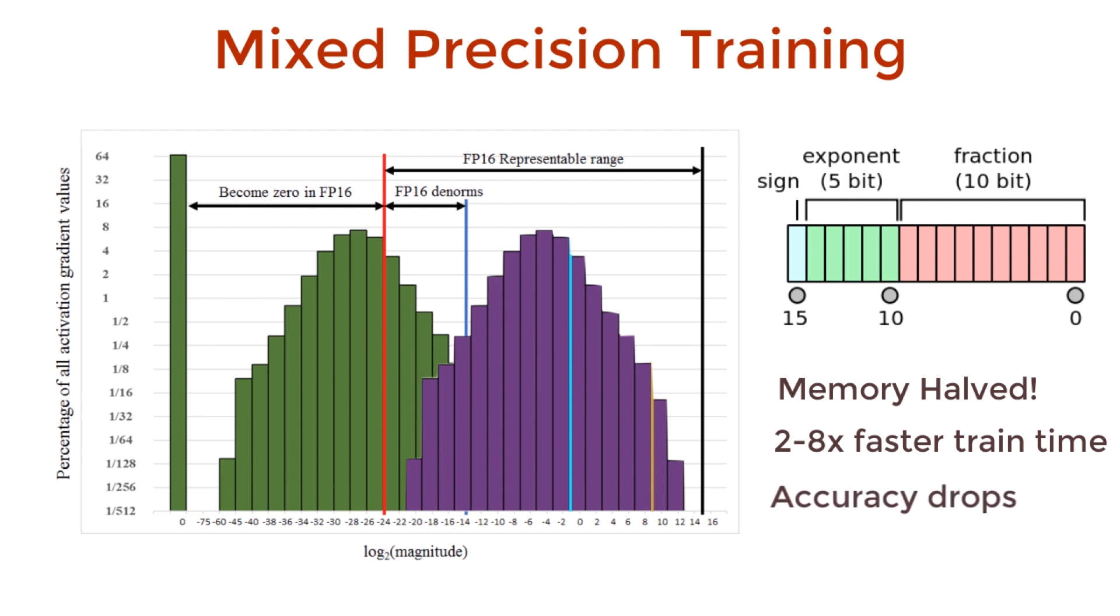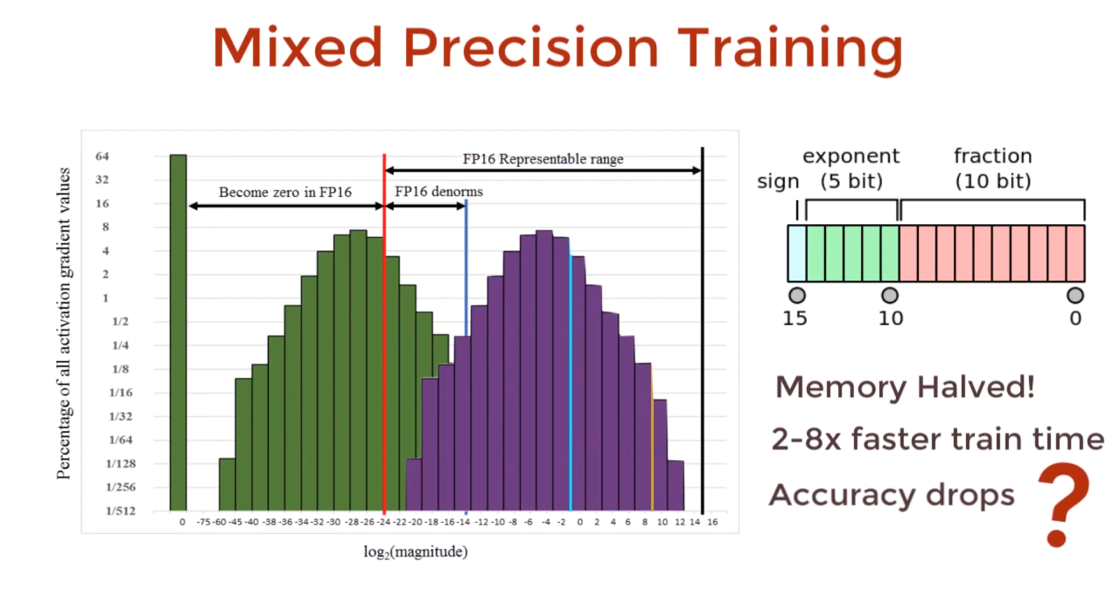The accuracy should obviously drop significantly since we are cutting precision big time. Or does it? Yeah, it drops by like 80%, making it completely useless. But if we scale our gradients up correctly, we can use only 16-bits while still maintaining accuracy. But how do we do this?